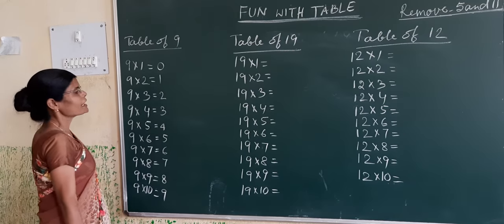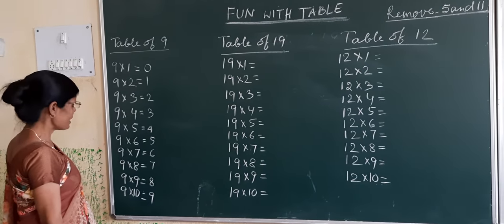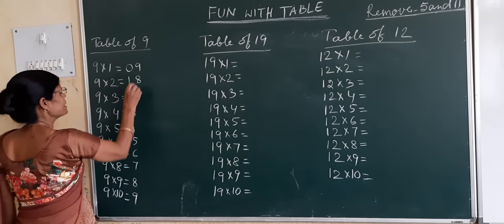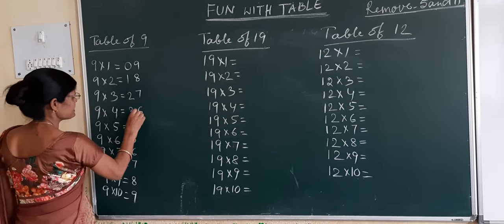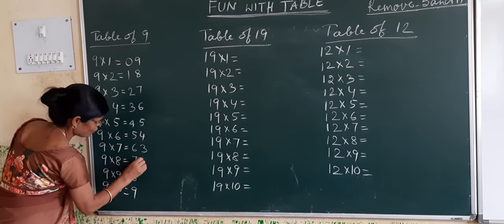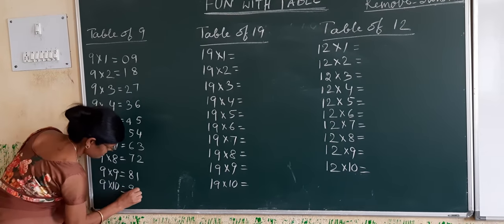Now write backward counting from 9 to 0: 9, 8, 7, 6, 5, 4, 3, 2, 1, 0.